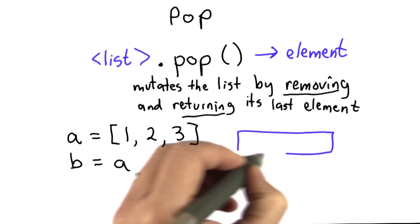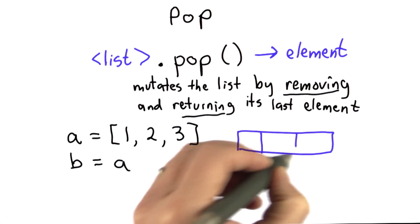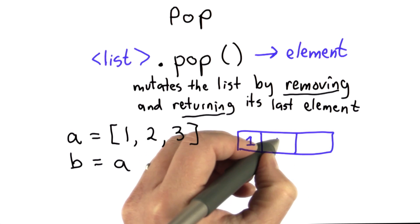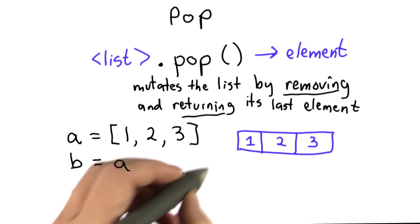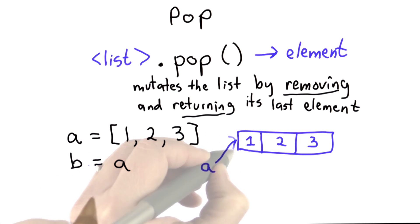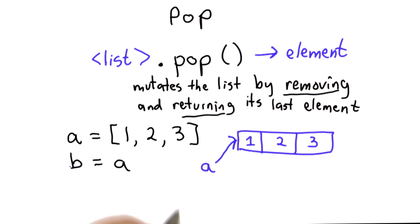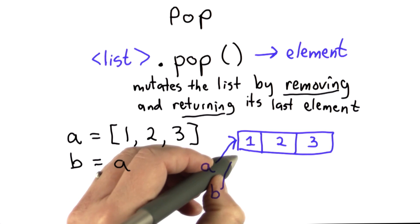So here's what we have after those two statements. We have created a new list with elements 1, 2, 3, and a refers to that list. After the assignment of a to b, b also refers to that list.